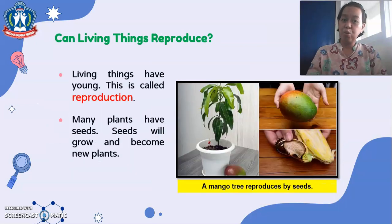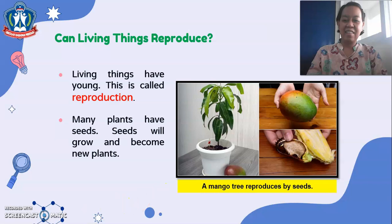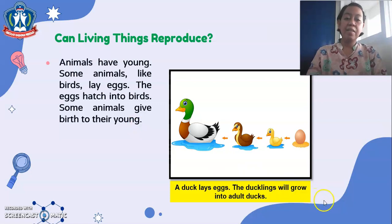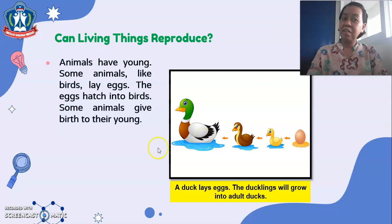Living things have young — this is called reproduction. Many plants have seeds, and seeds will grow and become new plants. For example, a mango tree reproduces by seeds. Animals also have young. Some animals, like birds, lay eggs, and the eggs hatch into young. Some animals give birth to their young. For example, a duck lays eggs, and the ducklings grow into adult ducks — an egg becomes a duckling, then a young duck, and finally an adult duck.